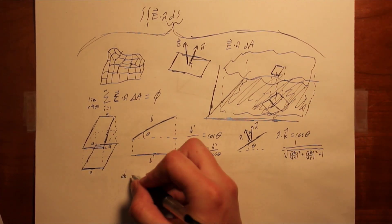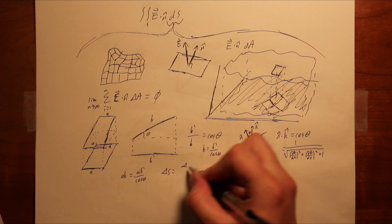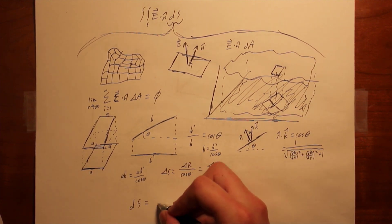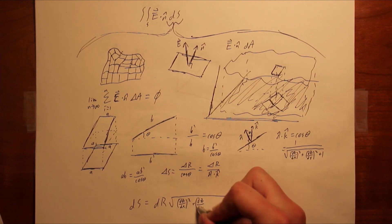The area of the surface is therefore related to the area of the projected region, and since we already have an expression for the unit normal to the surface, we can rewrite the dot product and get a final result as a differential.